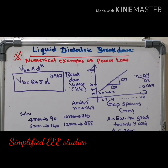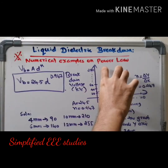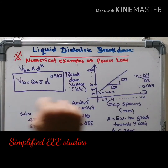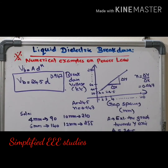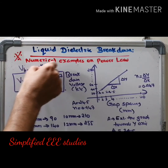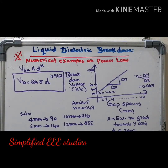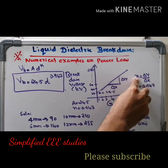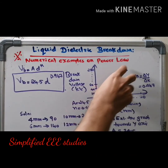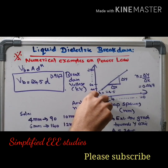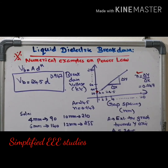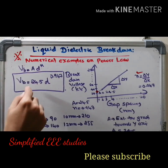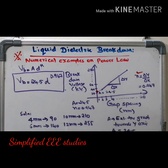Let me conclude. First, read the given data and segregate it. Next, plot the graph — breakdown voltage on Y-axis, gap spacing on X-axis — and you will get a straight line. Then derive the expression: VB = A · D^N. Calculate slope N from the curve. Thereafter, extend the curve towards the Y-axis; the meeting point gives A. Put the values of A and N into the equation to obtain the final power law.